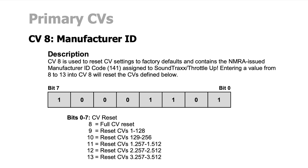CV 8 to a value of 8 is a full reset. If you don't want to reset everything: CV 8 to a value of 9 only resets CVs 1 to 128; CV 8 to a value of 10 resets CVs 129 to 256. So you can work in sections — if you mess up a section of CVs, you can reset those CVs without affecting other CVs that you already have set how you would like them.